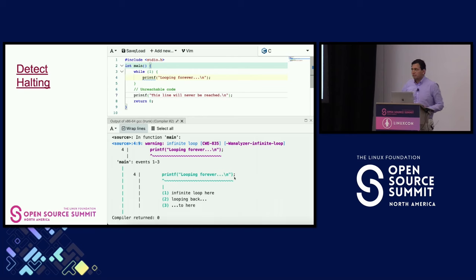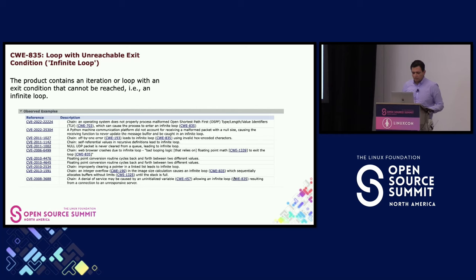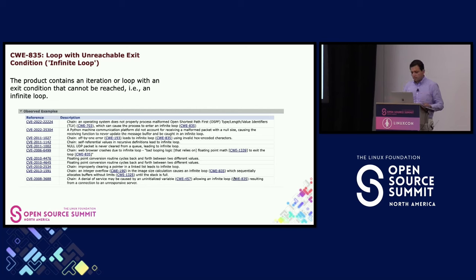It's a great help from that perspective because as a developer it's like, oh wait, I'm just about to commit a big mistake that could represent a big security hole. Here is the description of CWE835, which is a loop with unreachable exit condition — an infinite loop where the product contains an iteration where the exit condition cannot be reached. Here are some CVEs connected to this specific error through multiple projects, so it's a real thing in open source.